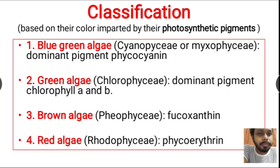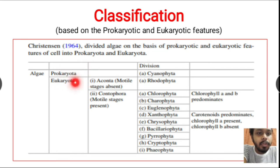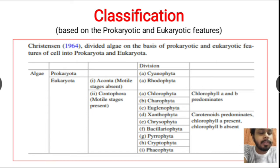The next classification is based on prokaryotic and eukaryotic features. Based on these features, algae are differentiated into two groups: prokaryota and eukaryota. The only algal group in the prokaryotic division is the cyanophyceae — cyanobacteria are the only type of algae that are prokaryotes. All other algae are present in the eukaryota.